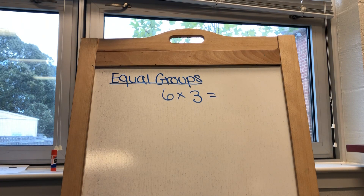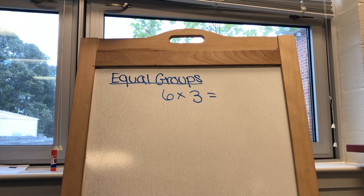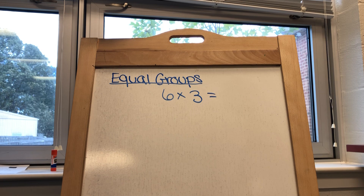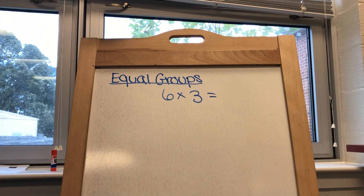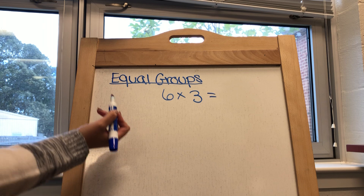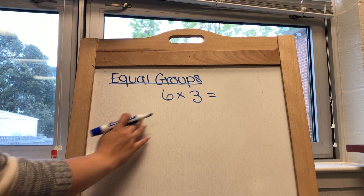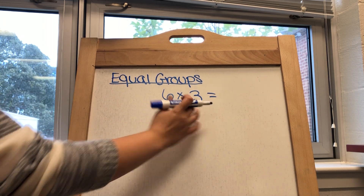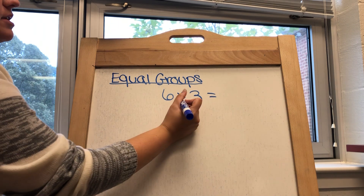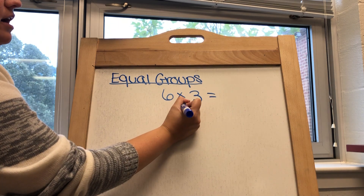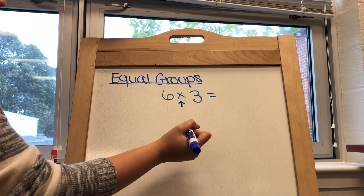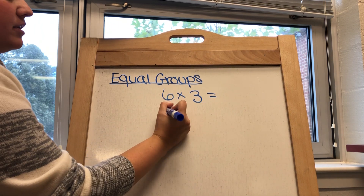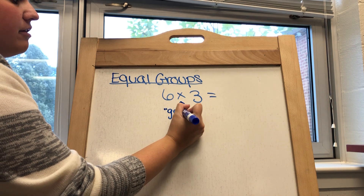One of the strategies that students learn for multiplication, if they don't know their facts, would be something called equal groups. In this example I have six times three. What I always tell the kids is that the multiplication symbol really means 'groups of.'